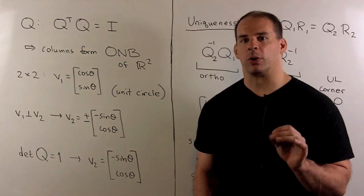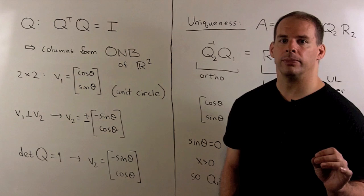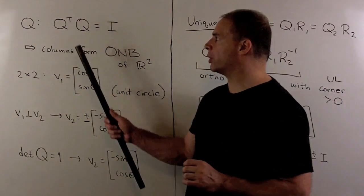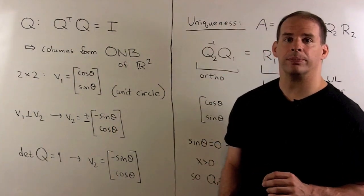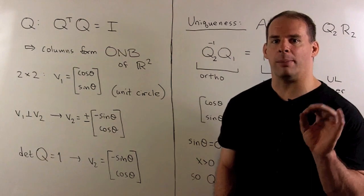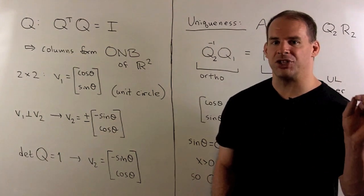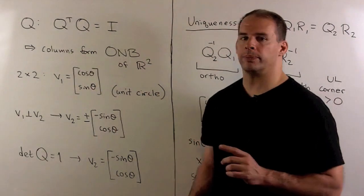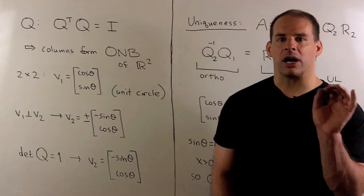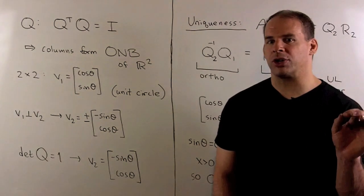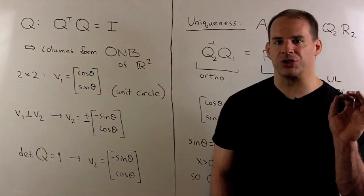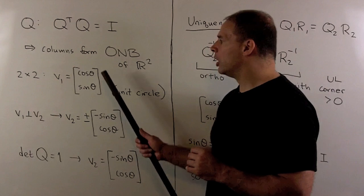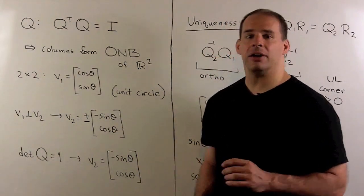Before we give the explicit formula, let's justify the assumptions on Q and R. First, the special form of Q when the determinant equals 1. An equivalent formulation of orthogonal is that Q transpose times Q equals the identity matrix. Decoding each row times column multiplication, the columns of Q form an orthonormal basis of R2, meaning our columns are unit vectors. The unit vectors in R2 give us the unit circle, so our first column vector V1 is of the form cosine theta, sine theta, for some theta.